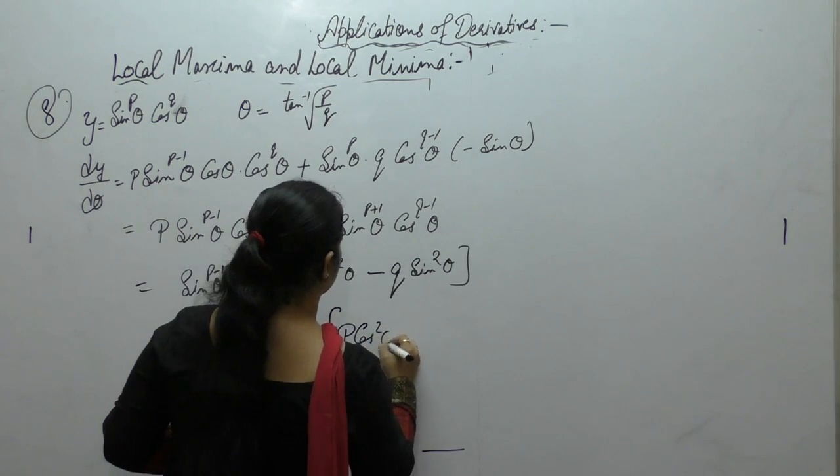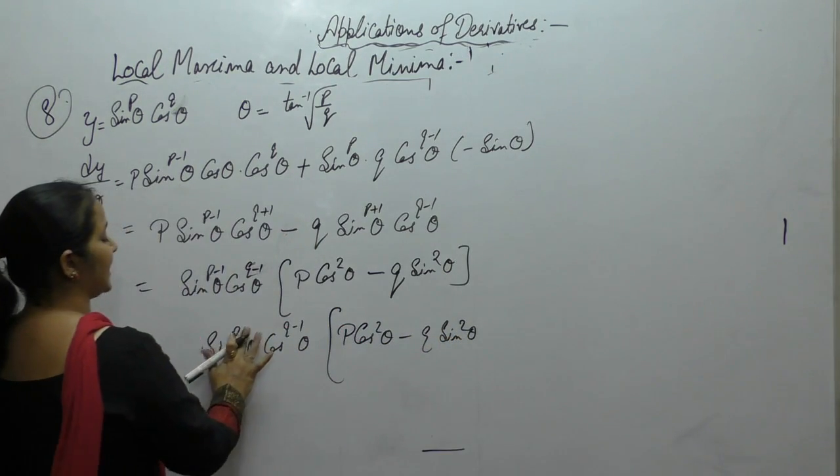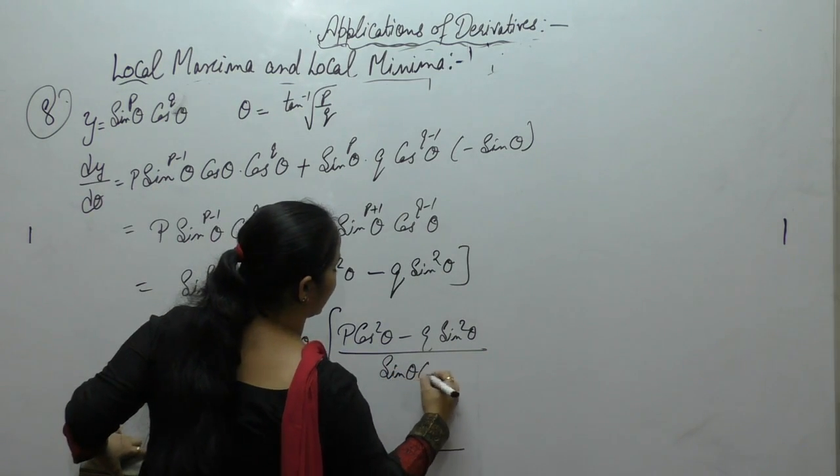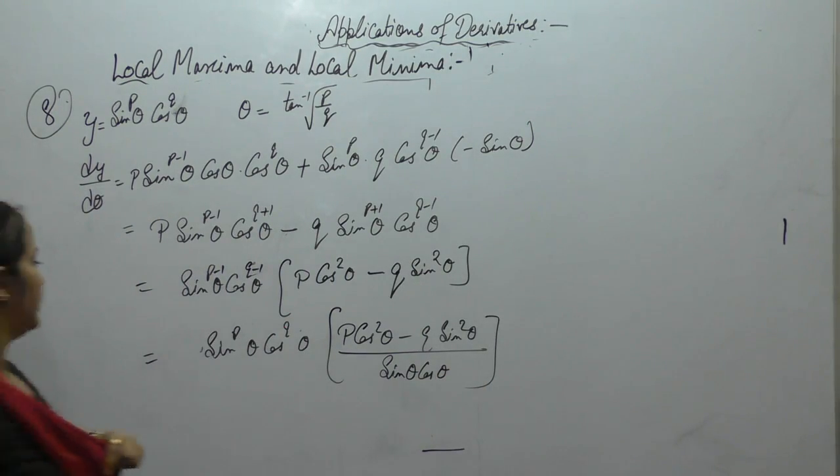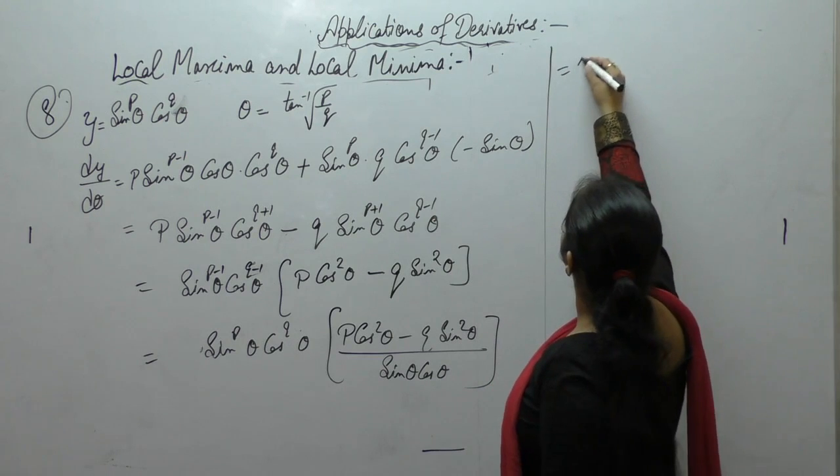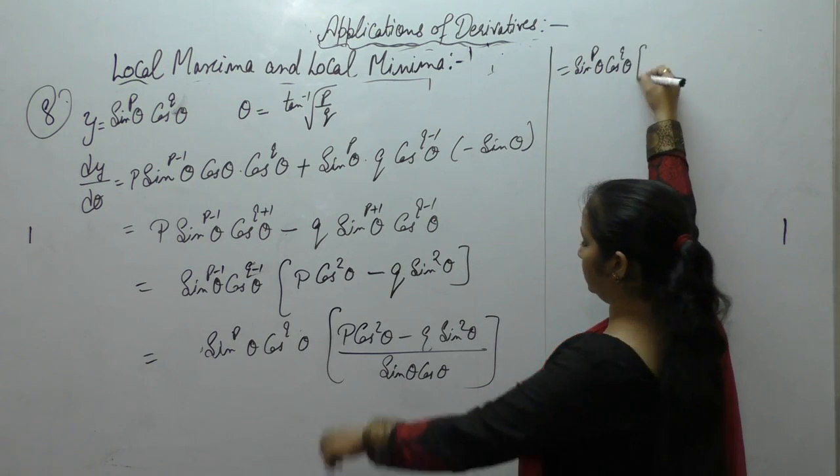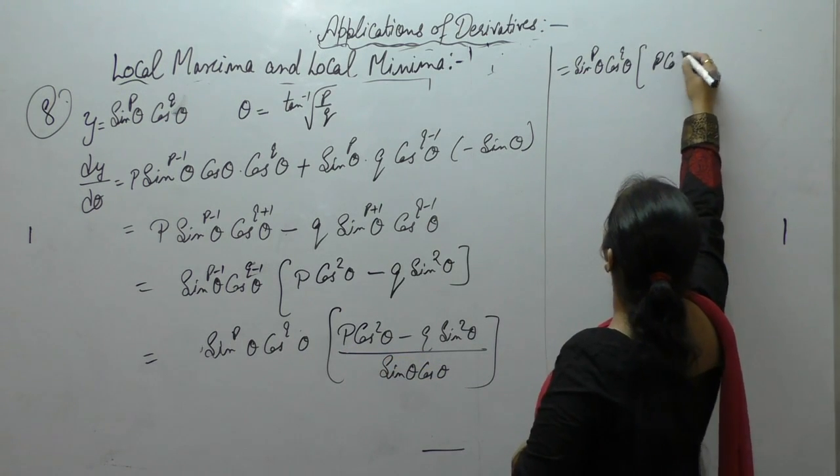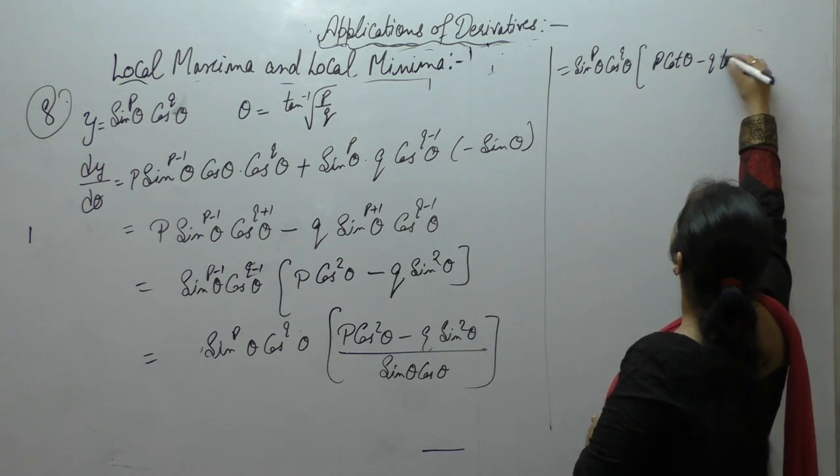P cos square minus q sine square. If we write sine p and cos q here then upon we have sine theta cos theta. We can write it as sine power p cos power q p. 1 cos will cancel. Cos upon sine, cos minus q sine upon cos tan.